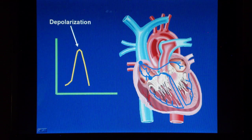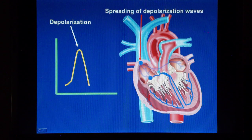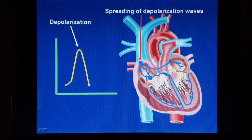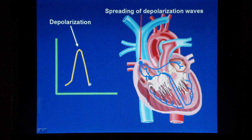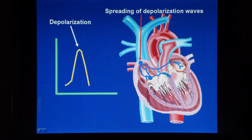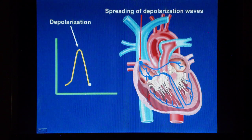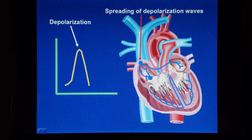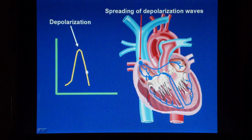Let's put everything together and see both the depolarization and the spreading of the wave. As you can see on the left side there is depolarization, and on the right side the spreading of the wave throughout the myocardium. This gives the heart the ability to contract and relax rhythmically.